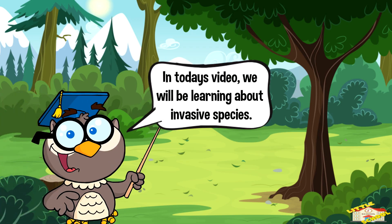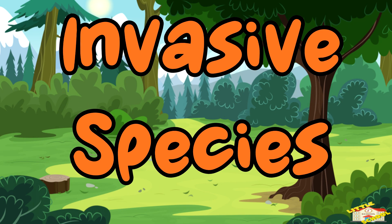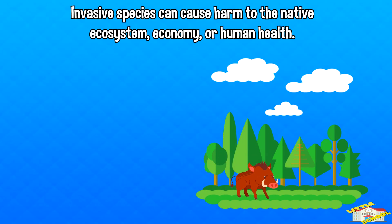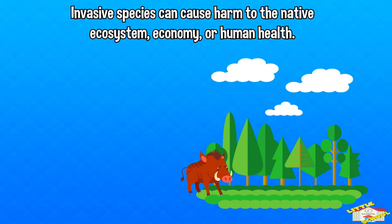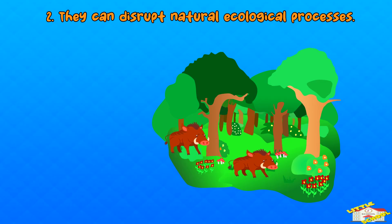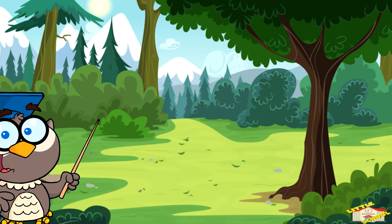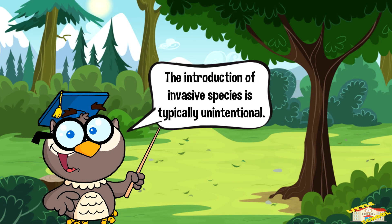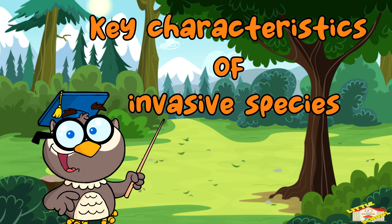Hey kids, in today's video we will be learning about invasive species. Are you ready? Let's begin. Invasive species are non-native organisms that, when introduced to a new environment, can cause harm to the native ecosystem, economy, or human health. These species can outcompete or prey on native species, disrupt natural ecological processes, and often lack natural predators or control in their environment. The introduction of invasive species is typically unintentional, but the consequences can be severe. Let's go over the key characteristics of invasive species.